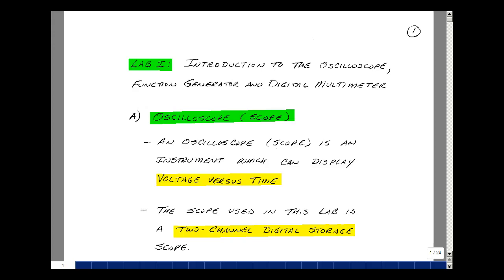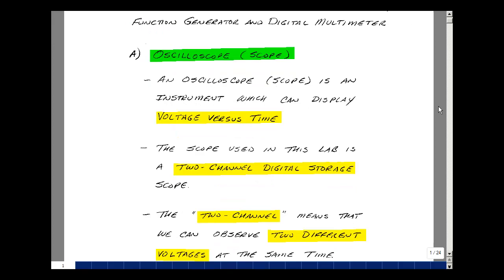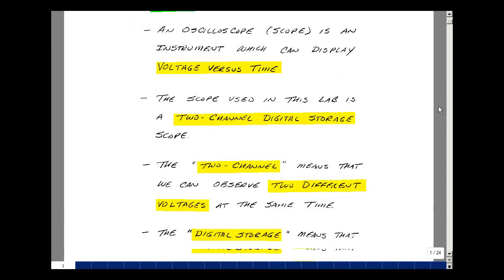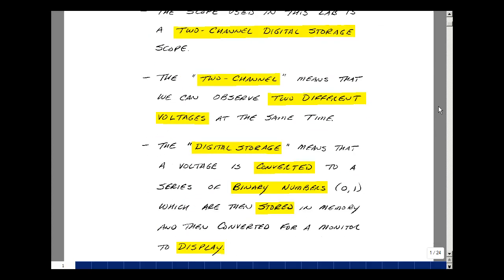Our first instrument is called the oscilloscope, or just scope for short. The oscilloscope is an instrument which can display voltage versus time. The scope used in this lab is also referred to as a two-channel digital storage scope.